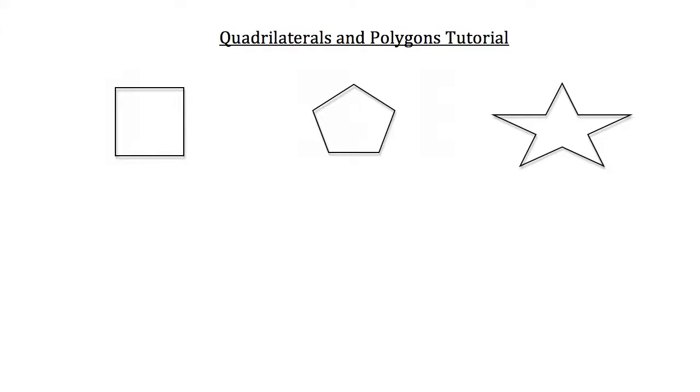The first looks just like a square and it is a square because the square is a type of quadrilateral. The middle figure is a pentagon. It's a five-sided figure which falls under the classification of a polygon.